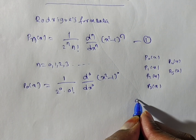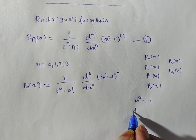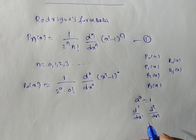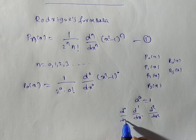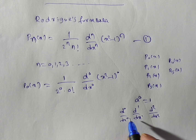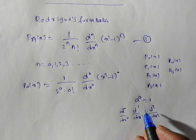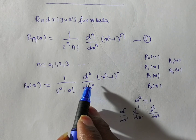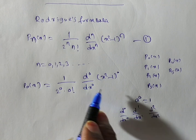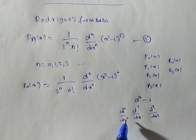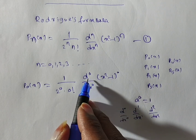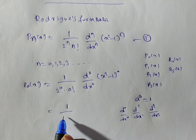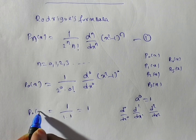Suppose a is a non-zero constant — a to the power 0 is 1. Now, d by dx is one-time differentiation; d squared by dx squared is two-times differentiation. If I write d power 0 by dx power 0, that means no differentiation at all. So d power 0 applied to x squared minus 1 whole to the power of 0 — since we are not differentiating and any nonzero quantity to the power 0 is 1 — numerator is 1 into 1, which is 1. And 2 power 0 is 1, and 0 factorial is 1. Hence, P0 of x is equal to 1.